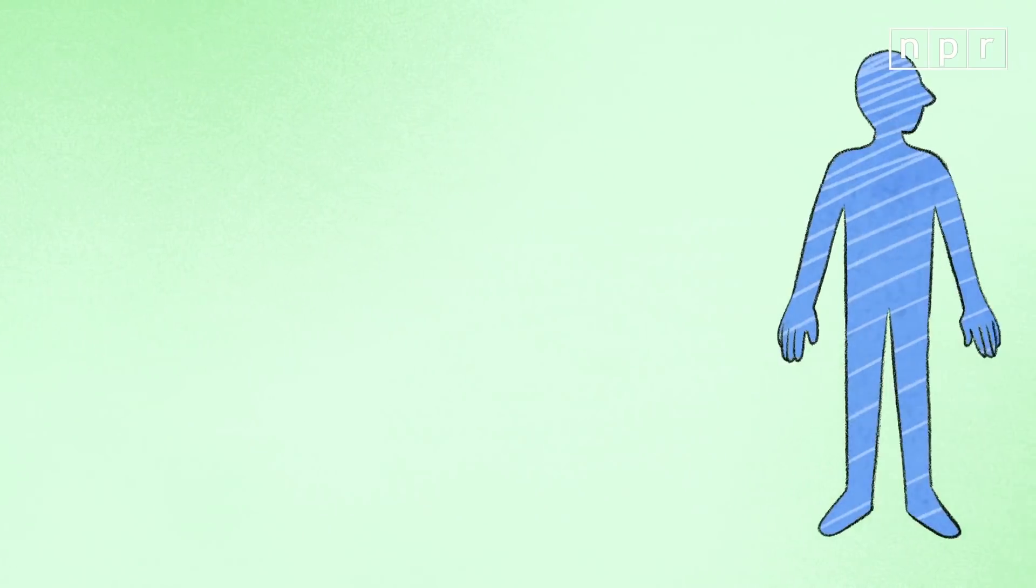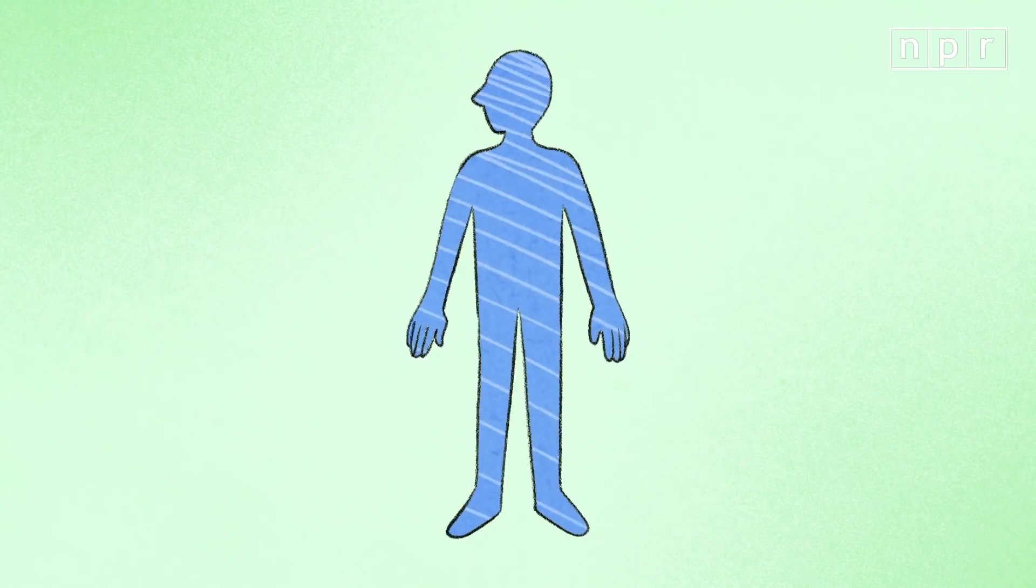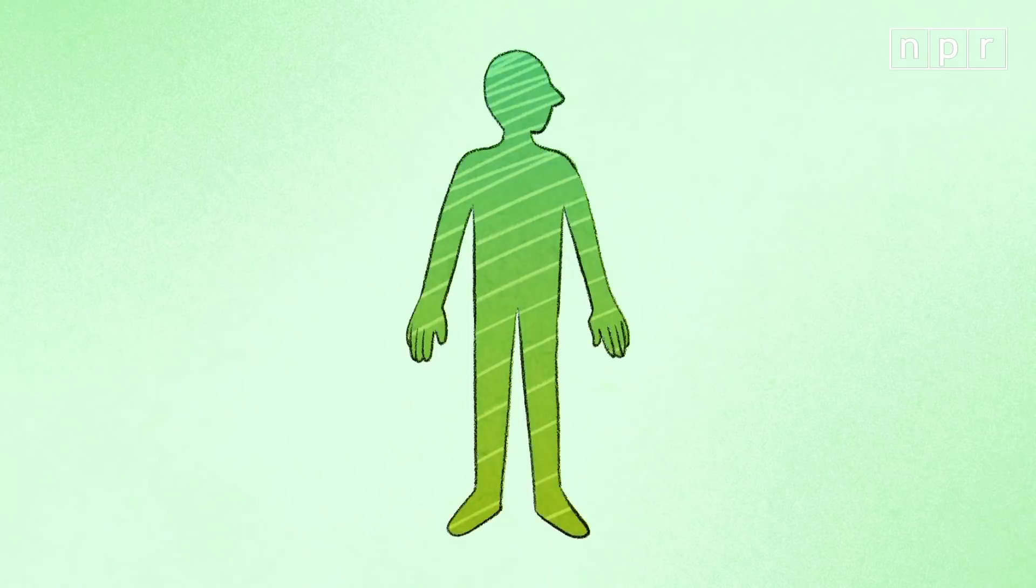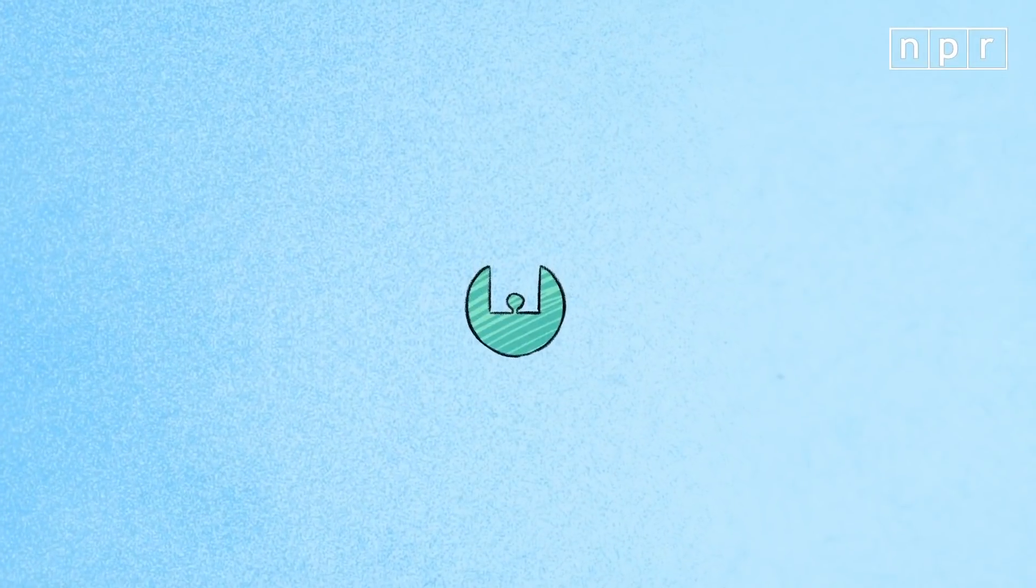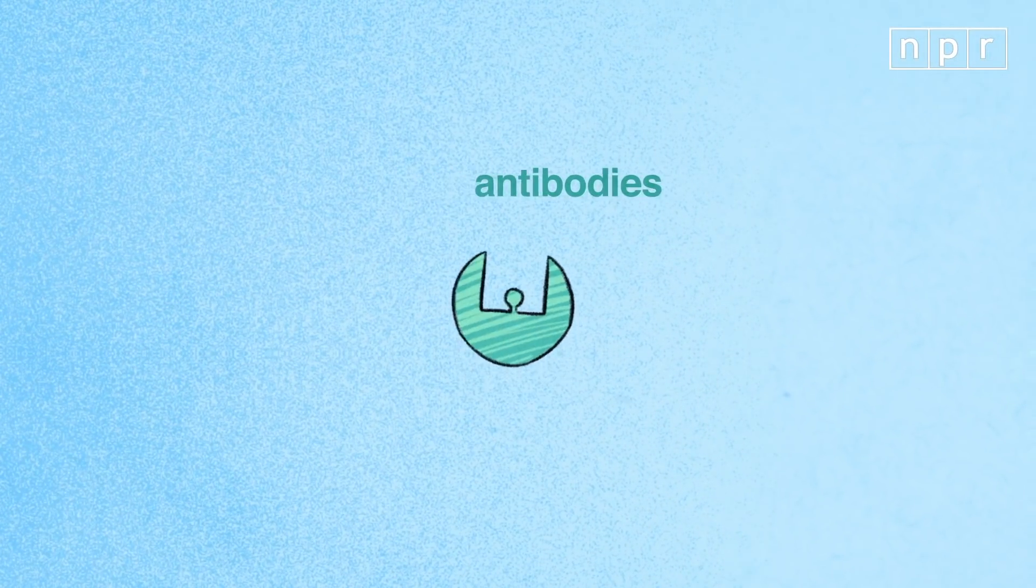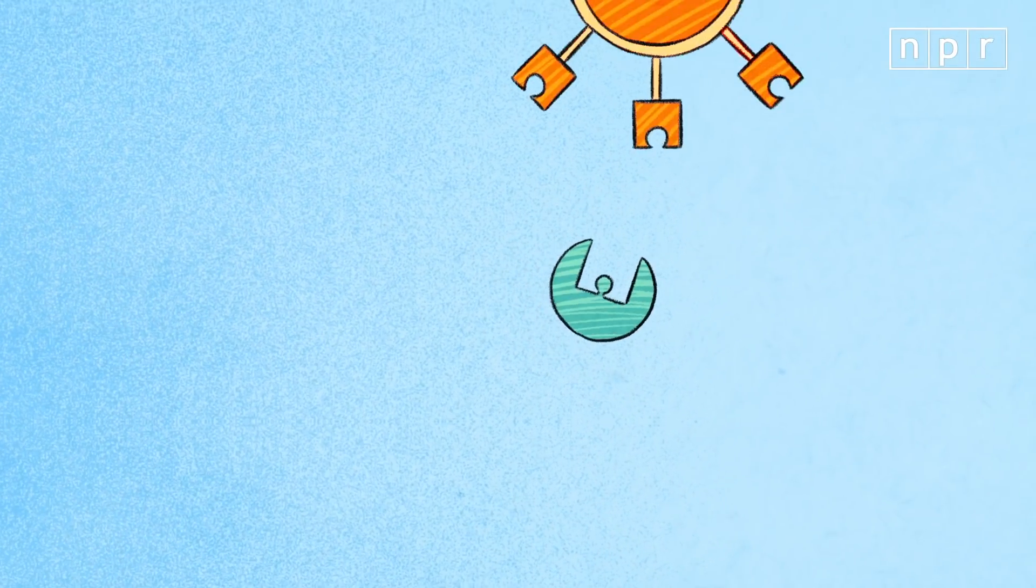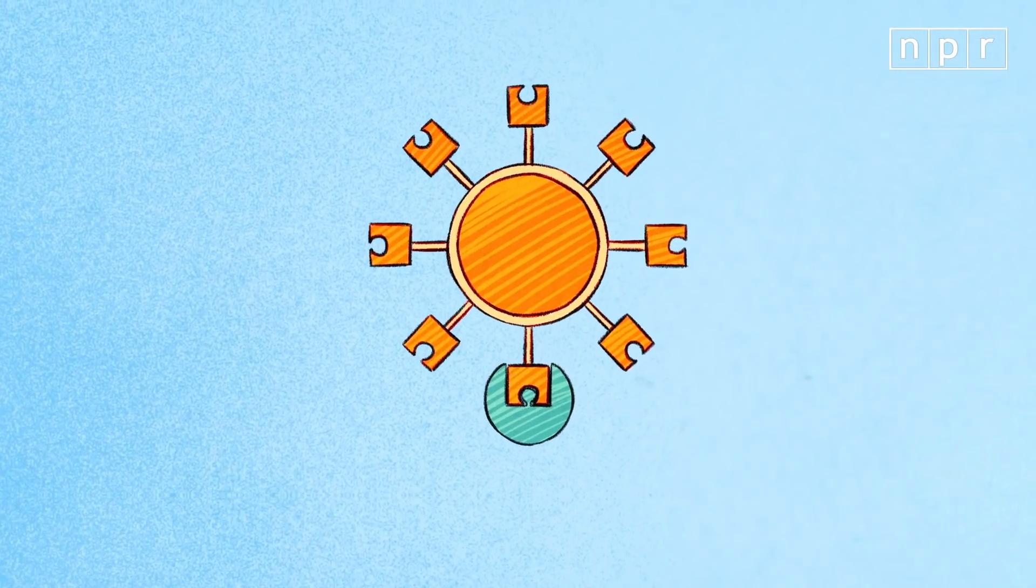During this time, the body isn't standing by idly letting this attack occur. Oh no, the immune system is already preparing a counterattack. It's manufacturing antibodies. Some of those antibodies act like little caps that stick to the ends of the virus's spike, like this.